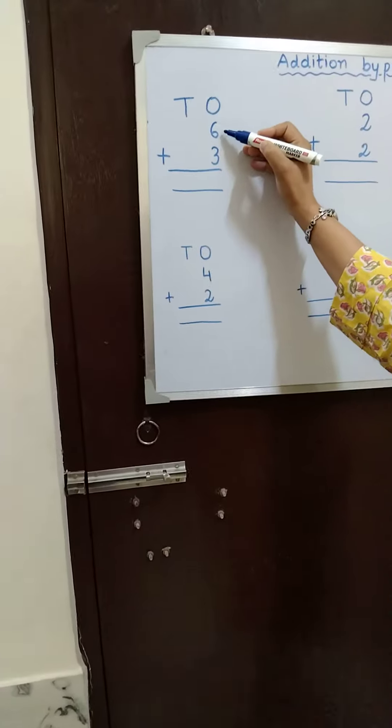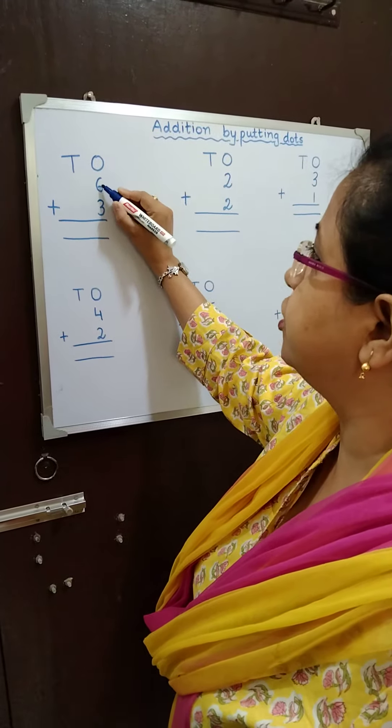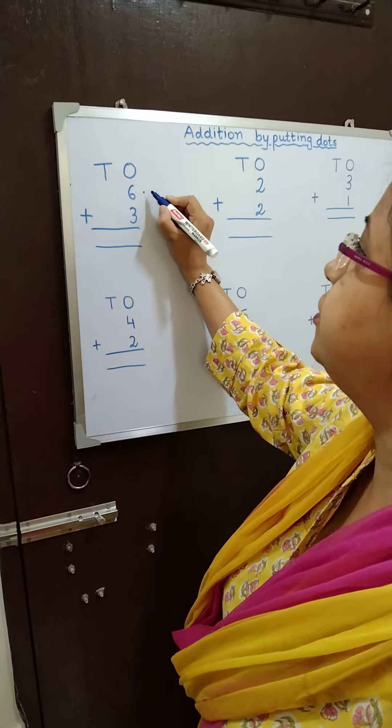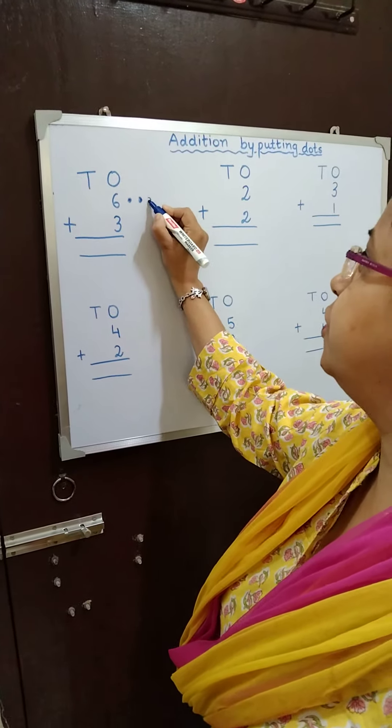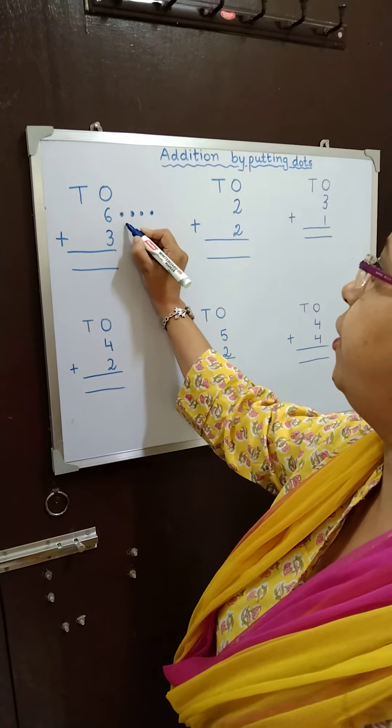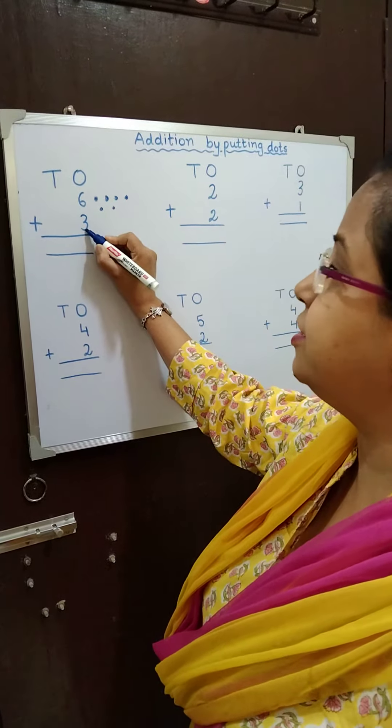See, 6 plus 3. So we will put dots, 6. So we will put 6 dots. 1, 2, 3, 4, 5, 6. And what is this?